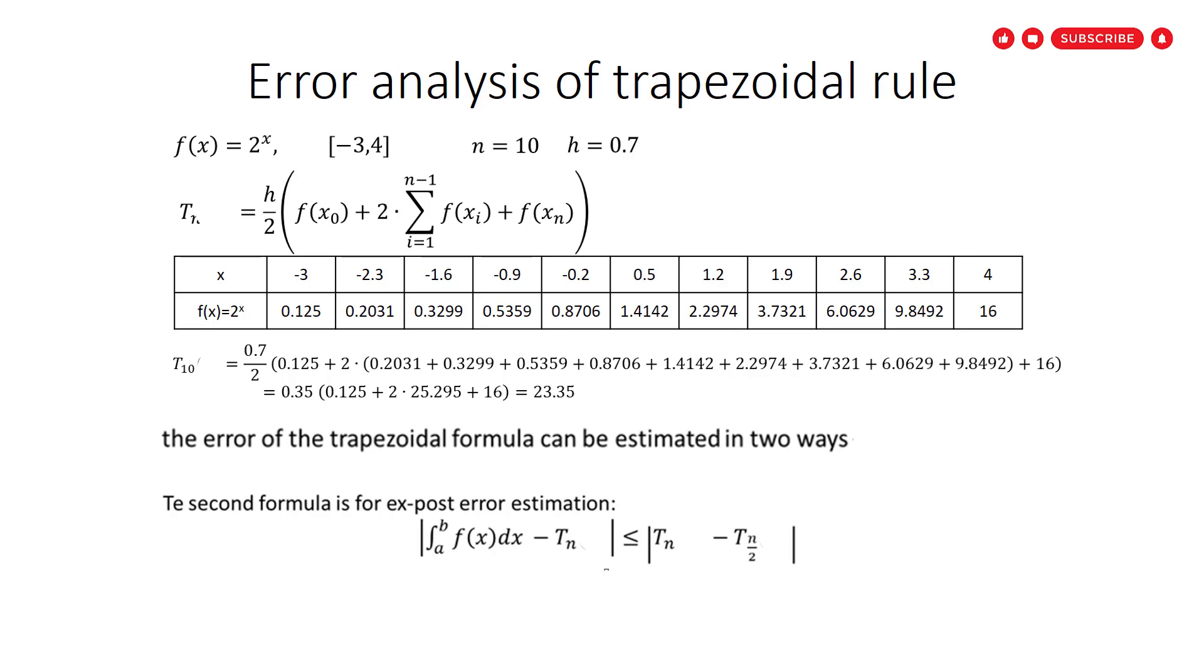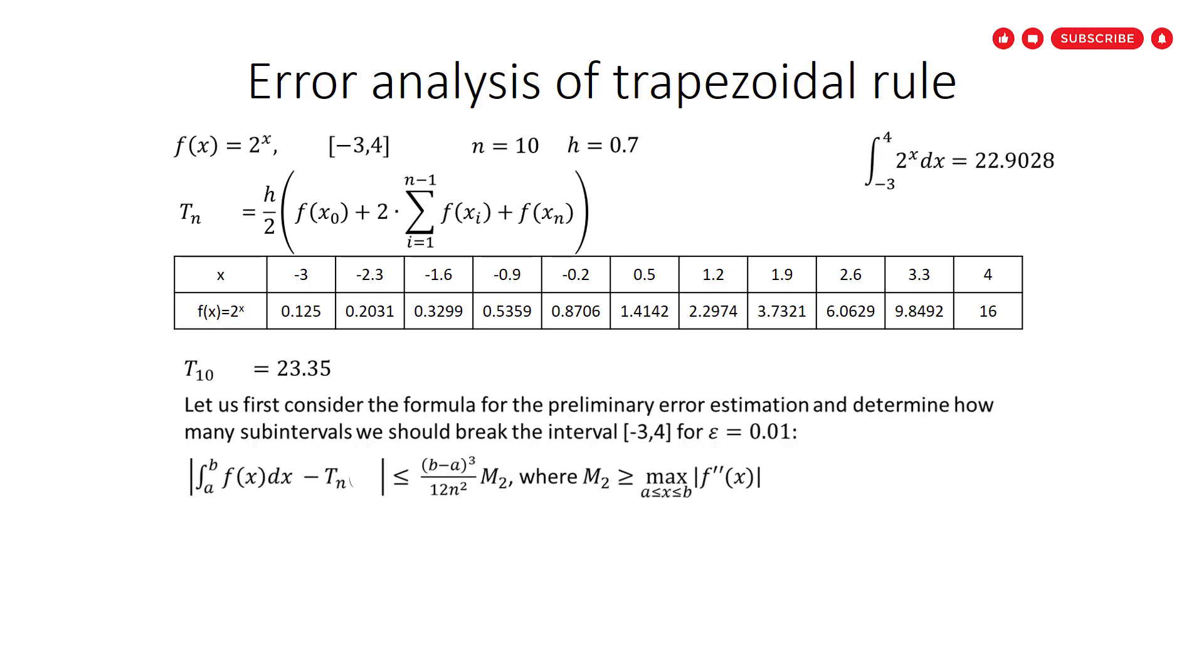I'll show you using both formulas. Let's start from the preliminary error. First, let us use the preliminary error formula for finding the number of subintervals. We have the interval, the original interval, minus 3 and 4. And we have to use the trapezoidal rule with an error equal to 0.01 or less.